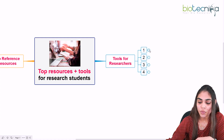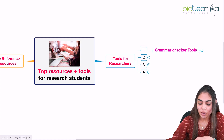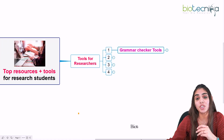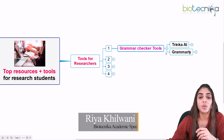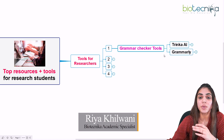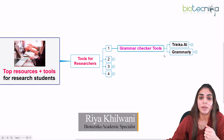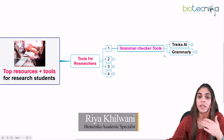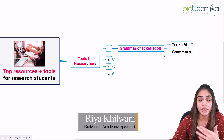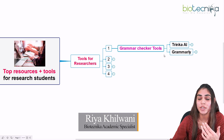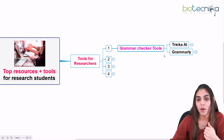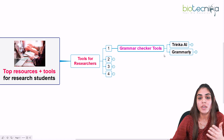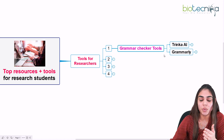Starting with the tools first — the first tool I have mentioned is grammar check tools. This tool is generally used to check if any kind of grammatical mistake, spelling mistake, or punctuation error is there in your sentence, or if you have not framed the sentence properly. All these tools will help you to enhance the language of your paper or research.